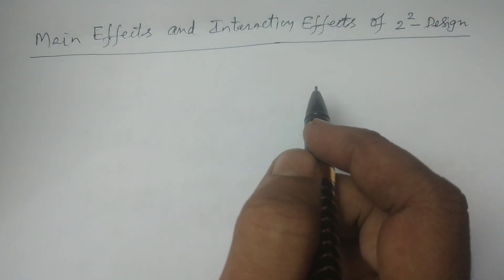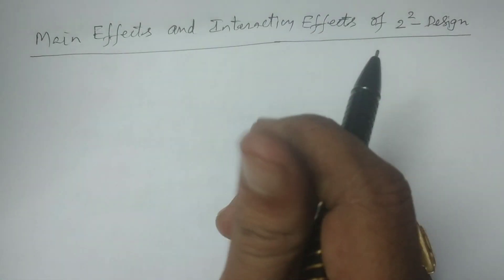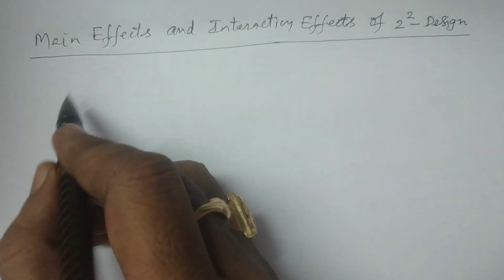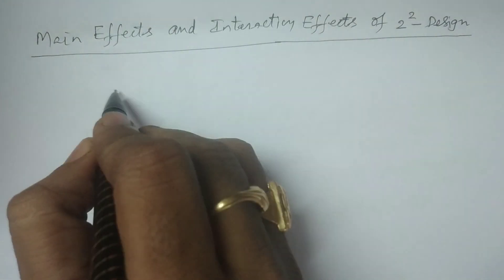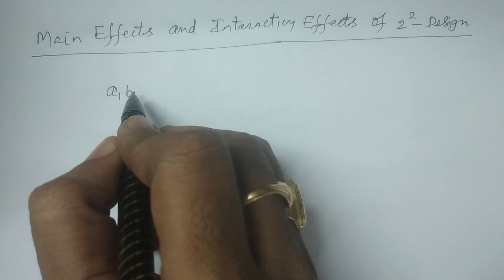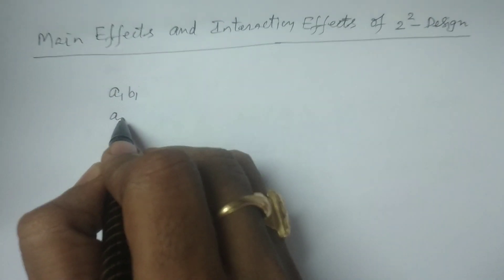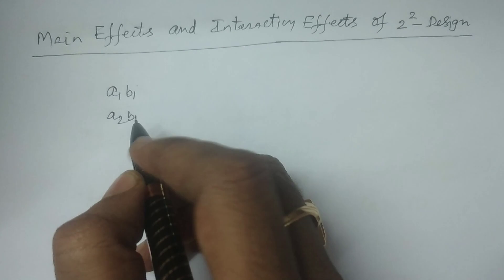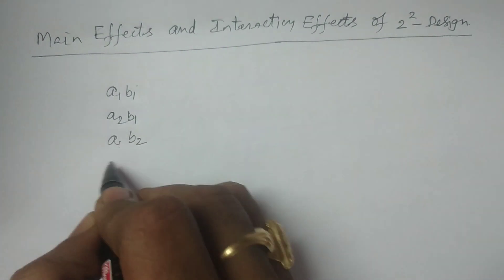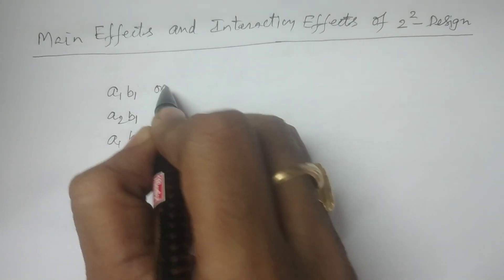In a two-square factorial experimental design, treatment combinations will be asked. Why treatment combinations? We have A1B1, then A2B1, then A1B2, and A2B2. So you need the first level only.